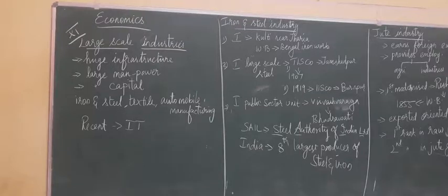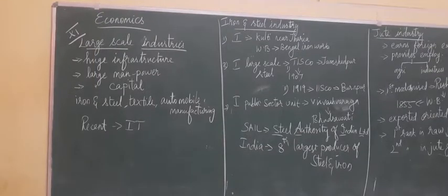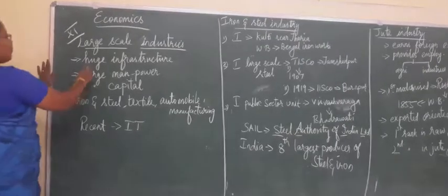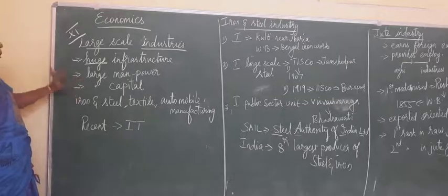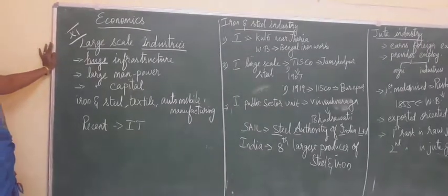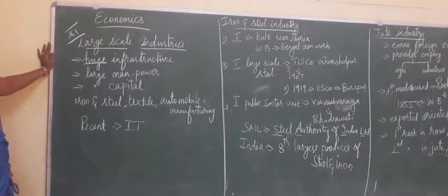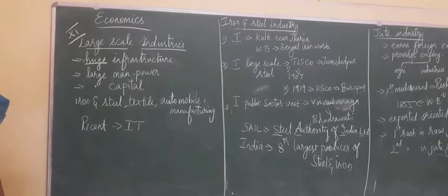What do you mean by large scale industries? The industries which require a large amount of investment, that is capital. They use large machinery and are called large scale industries. They require huge infrastructure, a large plant, large manpower, and also a huge amount of capital. Some of the large scale industries are iron and steel, textile industry, and automobile manufacturing industries. Recently, the information technology industries, the IT industries, are also considered to be one of the large scale industries.